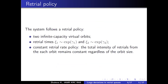Since we consider the retrial queue, there is a retrial policy. We have two infinite-capacity virtual orbits. The retrial times are exponentially distributed with different parameters for each type of customer. If a customer of type 1 meets a busy server, it goes to the first orbit, and inter-retrial times are exponentially distributed with parameter gamma1, and similarly for type 2. We consider constant retrial rate policy, meaning the intensity of retrials remains constant regardless of the orbit size.